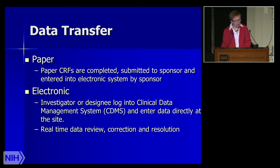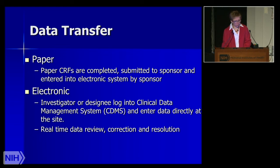For paper CRFs, forms are usually completed at the site, submitted to the sponsor, and then electronically entered by the sponsor at their site — a lot of extra work and expense. With electronic forms, sites can log in and enter data directly, allowing for real-time data review. Other methods include patient-reported outcomes, where patients fill out paper forms that are then sent in or transcribed into an electronic system — including patient diaries, calendars, questionnaires, quality-of-life forms, and data-supporting source documents.